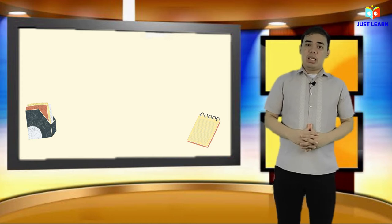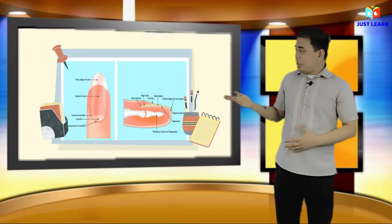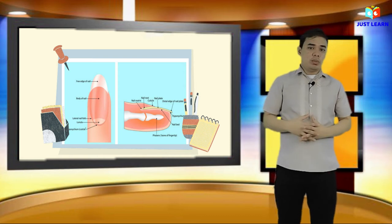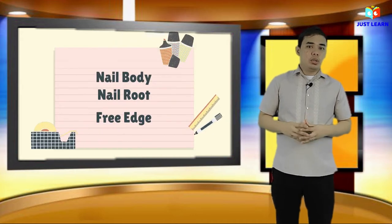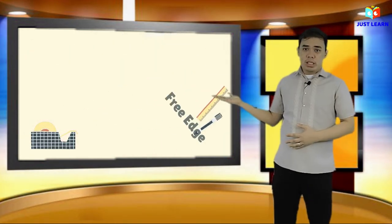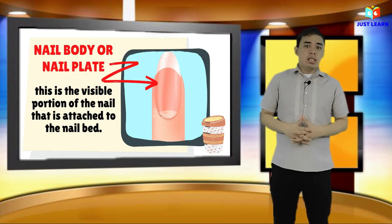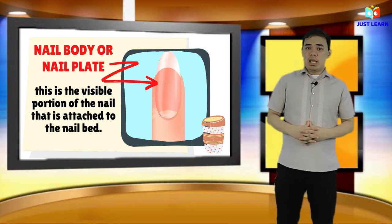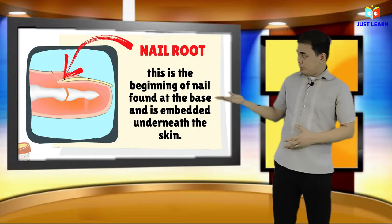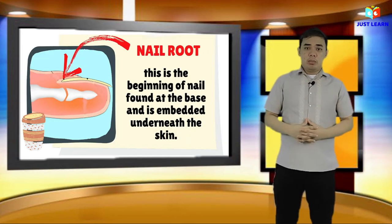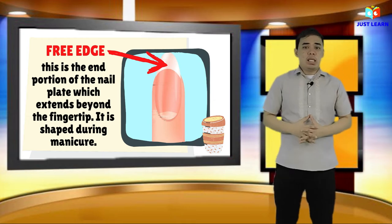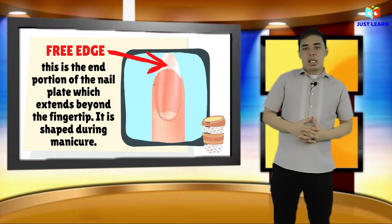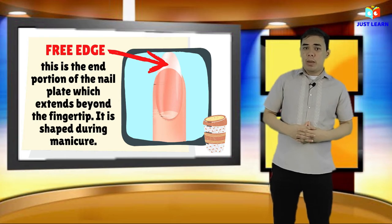Let us now discuss the nail and lead structure. The picture shows the different structures of the nails. The nail consists of three parts: nail body, nail root, and free edge. The first is the nail body or nail plate — this is the visible portion of the nail that is attached to the nail bed. Next is the nail root, which is the beginning of the nail, located at the base and embedded under the skin. And lastly, the free edge — this is the end portion of the nail which extends beyond the fingertip.